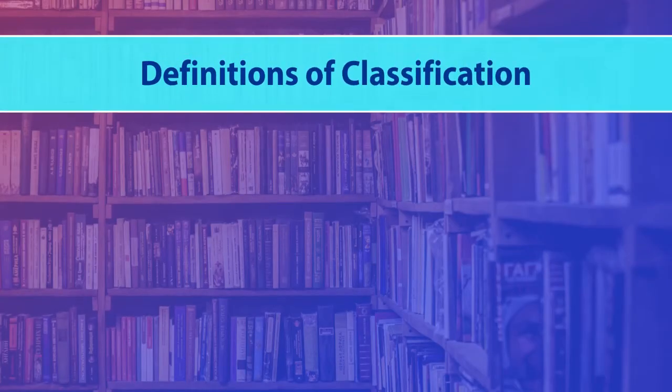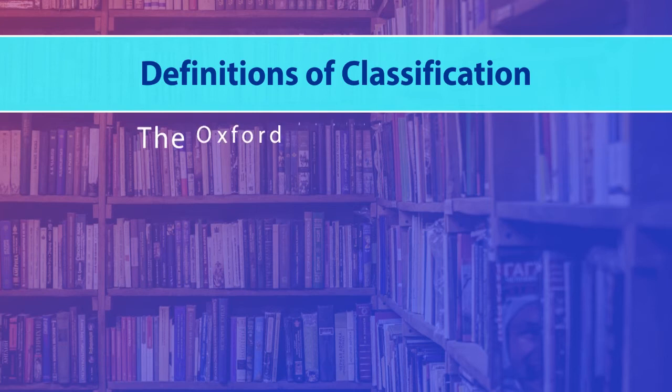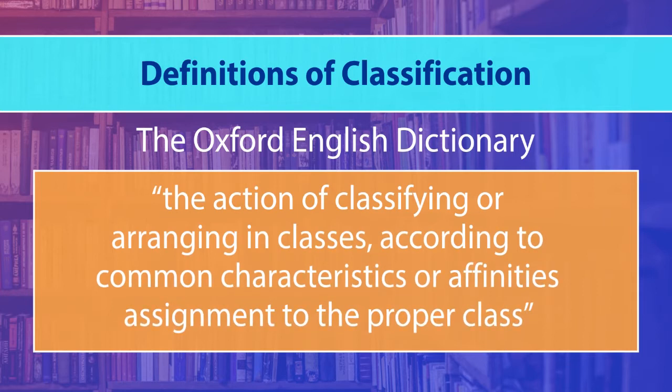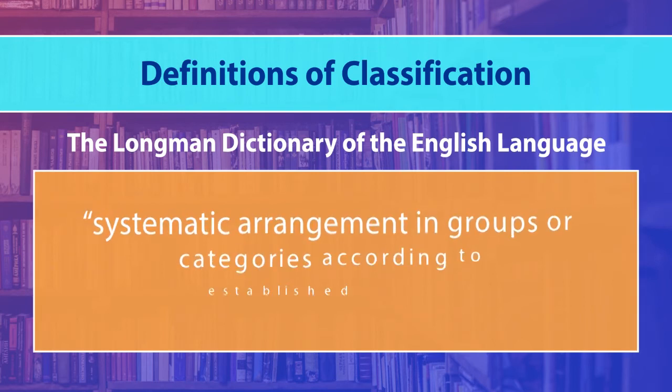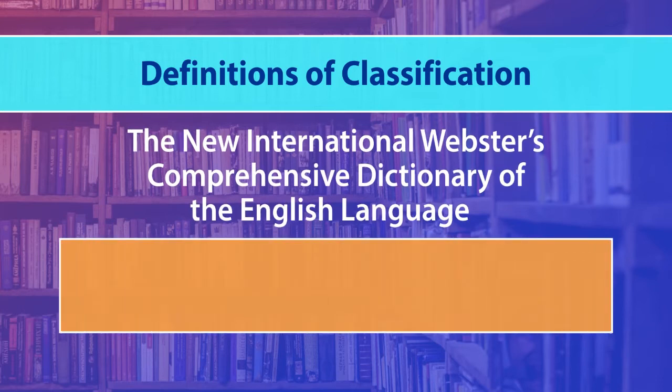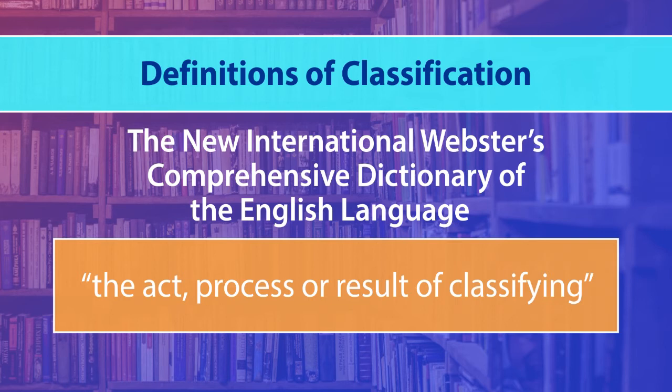What are the basic definitions of classification? There are various sources from where you can see the definition of classification. I have taken from a couple of sources. According to the Oxford English Dictionary, classification is the action of classifying or arranging in class according to common characteristics or affinities. Assignment to the proper class. If you see the Longman Dictionary of English language, it defines classification as systematic arrangement in a group or categories according to the established criteria. The New International Webster's Comprehensive Dictionary of English language describes classification as the act, process or results of classifying.